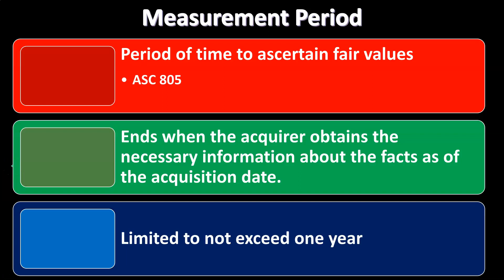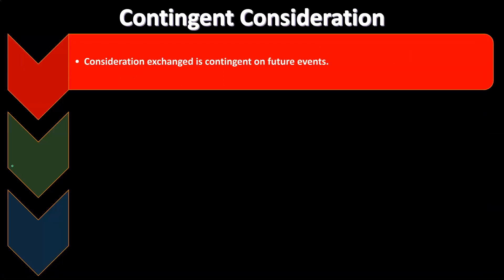The measurement period is limited to not exceeding one year. The next somewhat messy topic is contingent consideration. If you think about the acquisition process — one company purchasing another — if the purchase was straight cash, that's straightforward. If stock was exchanged, we can still figure that out. But if there's a contingent consideration given as part of the acquisition process, that gets messier as well — it adds complexity to the process.